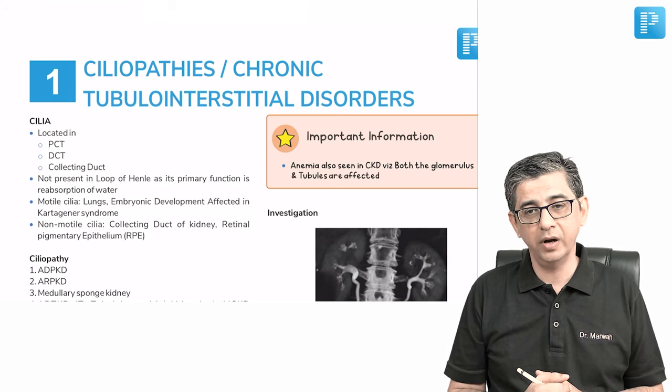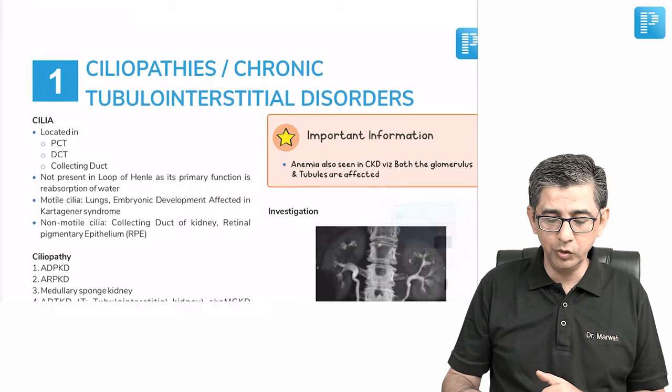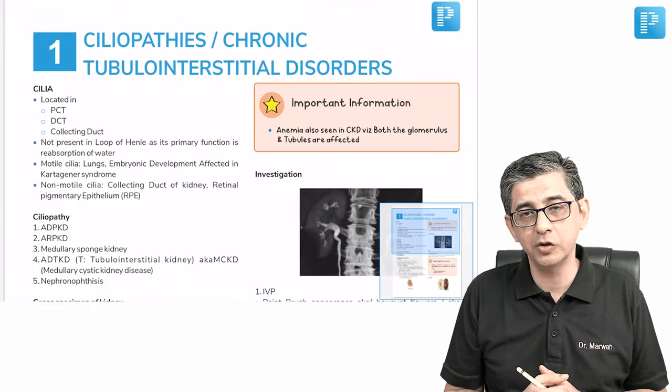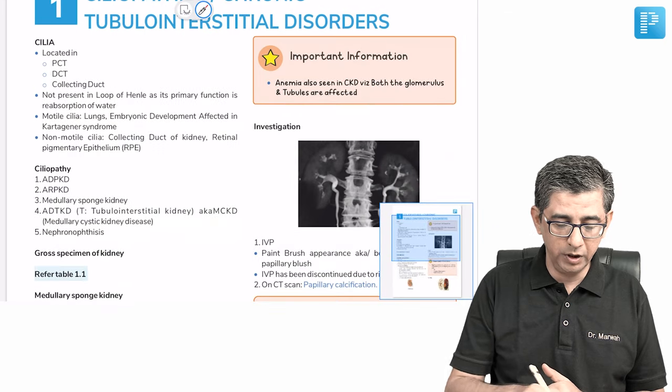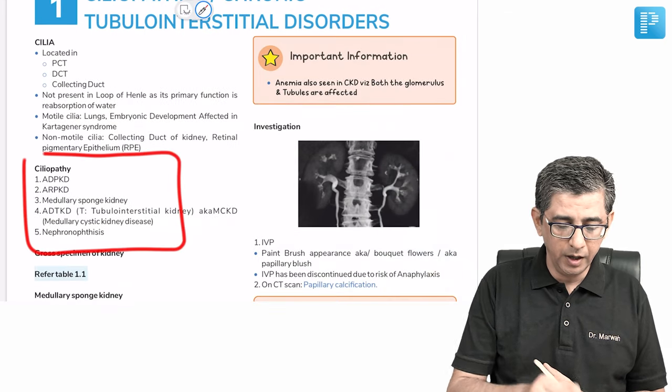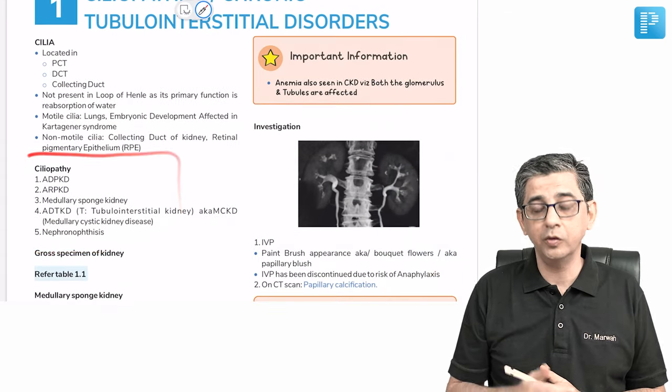Now let's have a quick look at how these notes are organized. I'll just browse through the topic of ciliopathies—that is, chronic tubular interstitial disorders—and you'll notice that all the names are initially highlighted.